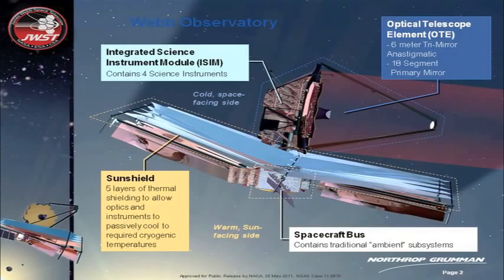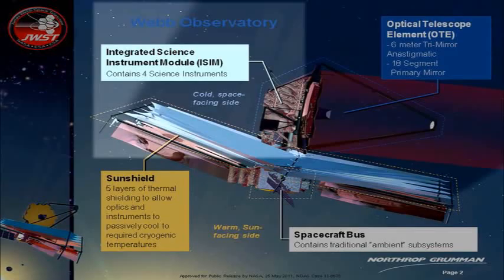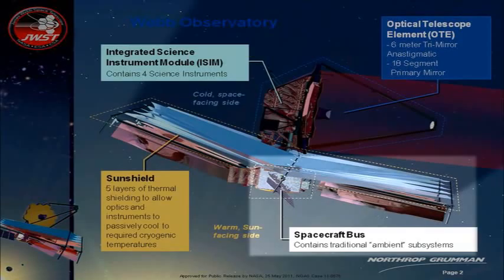I think of the telescope in four major pieces. First, the optical telescope element — the mirrors and the composite structure that holds them. Behind that is the integrated science instrument module. Those instruments are being built by: the University of Arizona and Lockheed Martin for one, the European Space Agency for another, JPL for one, and the Canadian Space Agency. So they're being built all around the world.